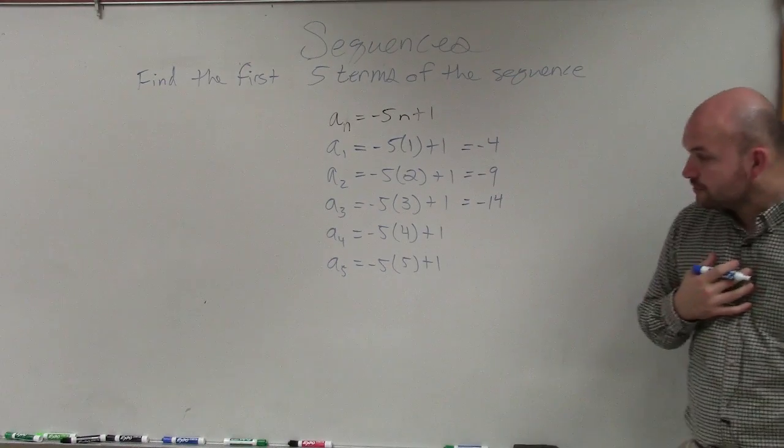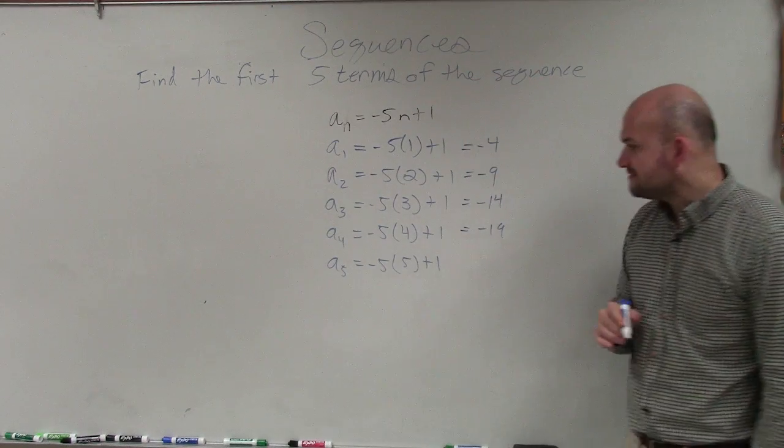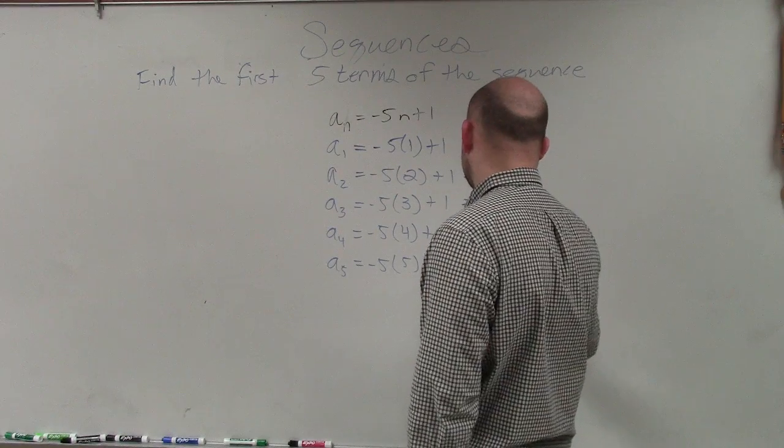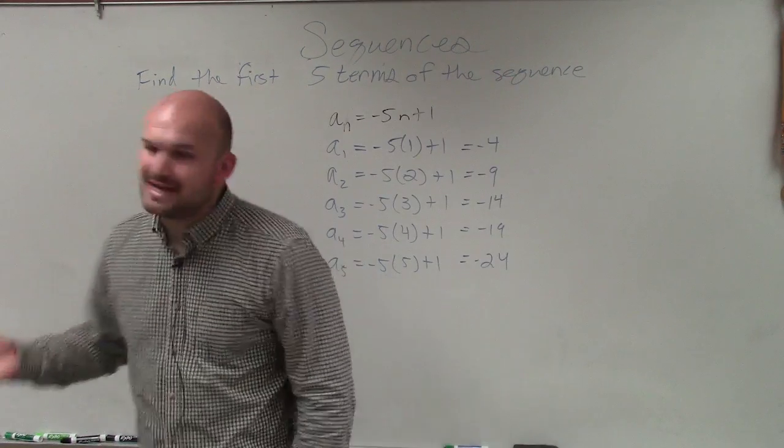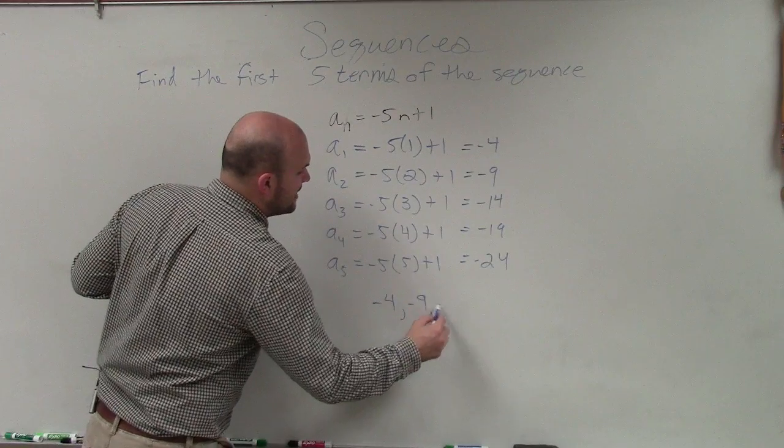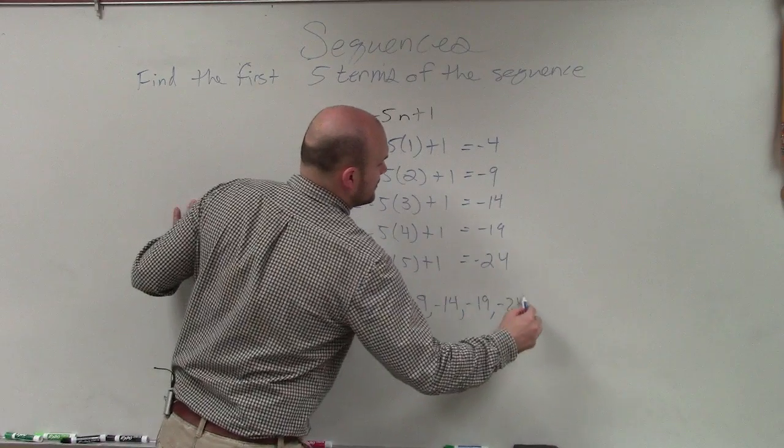Negative 5 times 4 is negative 20, plus 1 is negative 19. And negative 5 times 5 is negative 25, plus 1 is negative 24. So if we were just going to write this out, we can write them just like negative 4, negative 9, negative 14, negative 19, negative 24.